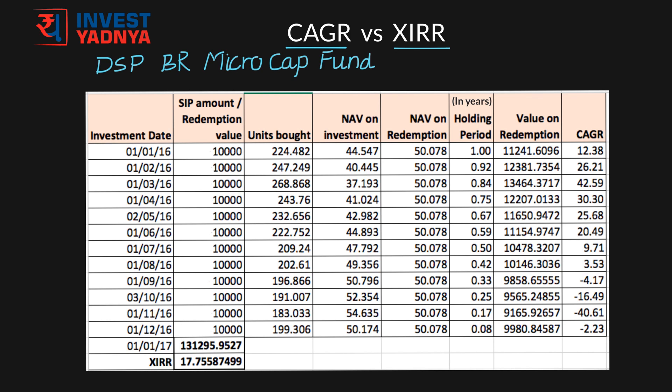Let us say you started an SIP in DSP BlackRock Microcap Fund from 1st of January 2016 to 31st of December 2016, and you redeemed your investment on 1st of January 2017. The SIP amount was 10,000 rupees each month. This is a real example and these are actual NAVs of the fund during this investment period.